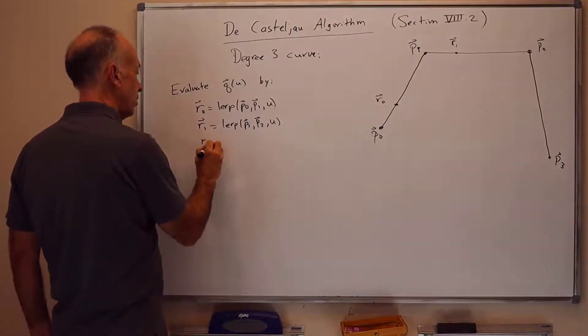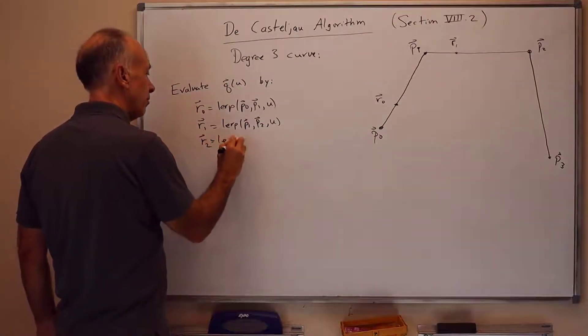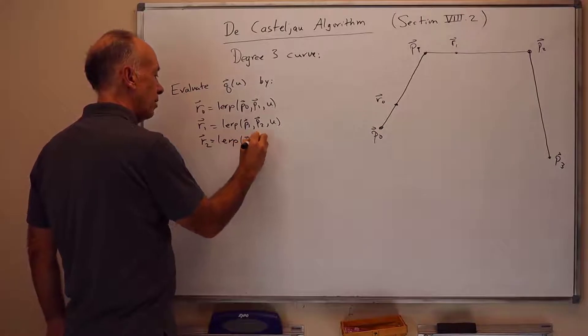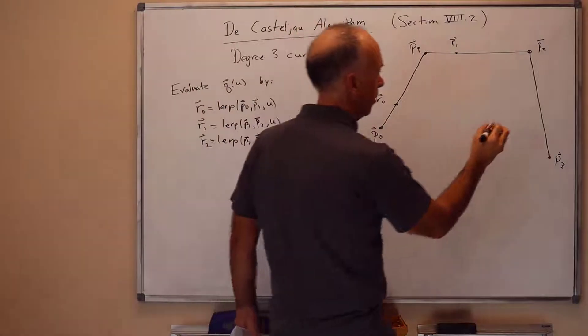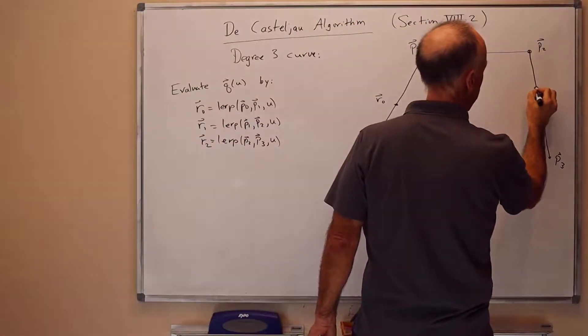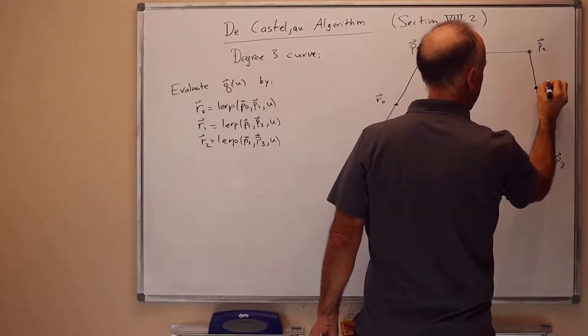And now R2 is the same thing, going from P2 to P3, fraction U. We're lerping from P2 to P3 by U. And there it is, R2.